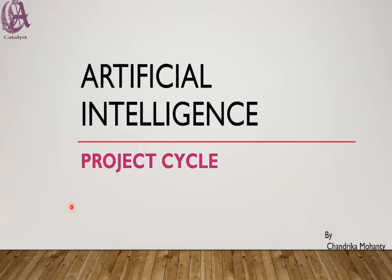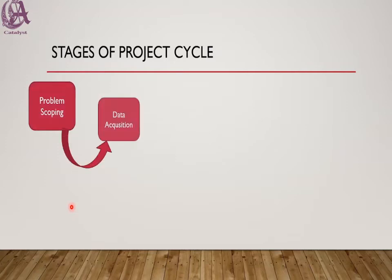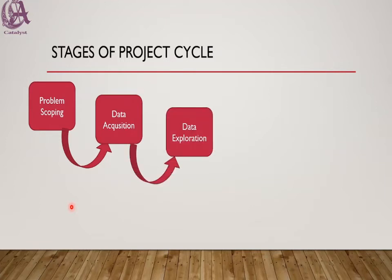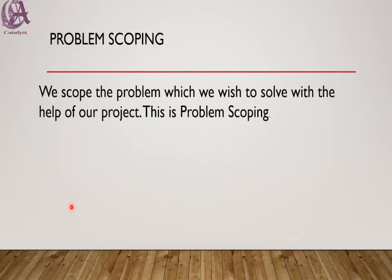So what is this project cycle and what are the stages of the project cycle? The stages of the project cycle are: first is problem scoping, data acquisition, data exploration, modeling, and evaluation. In problem scoping, we basically scope the problem which we wish to solve with the help of our project.